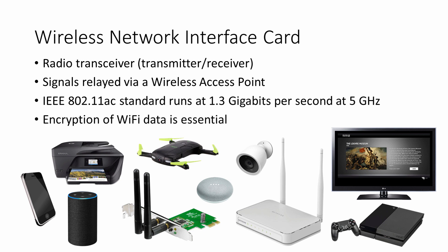A Wi-Fi network is more difficult to secure than a cabled network because radio signals are broadcast on the air, so to speak. It's therefore essential that data on a Wi-Fi network is encrypted, so it can't be understood if it's hacked. If you don't set up your home's Internet router with an encryption key, you're practically inviting the neighbours to steal your expensive bandwidth. Encryption and decryption of Wi-Fi data is the job of the software on the computing device, not the wireless network interface card.